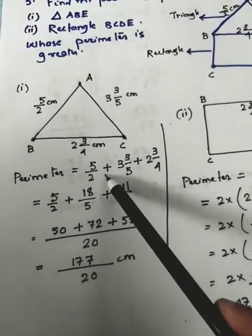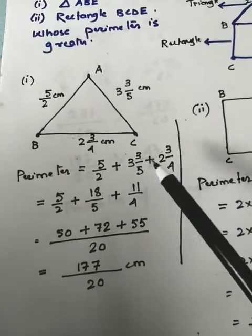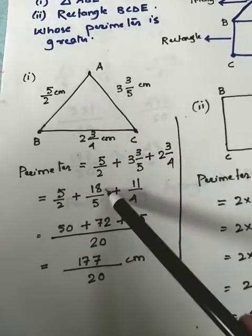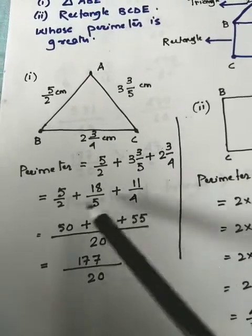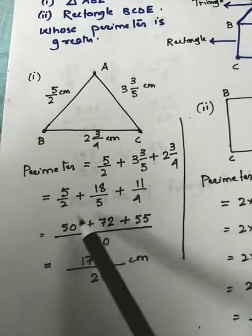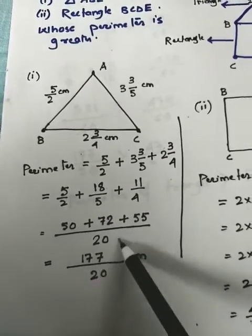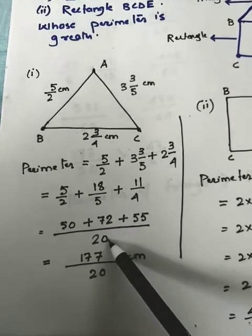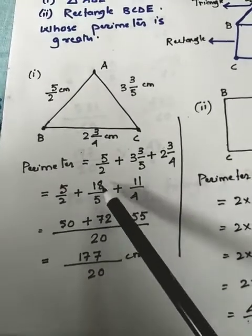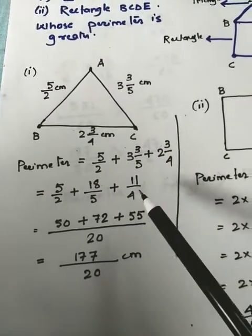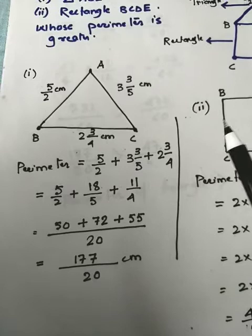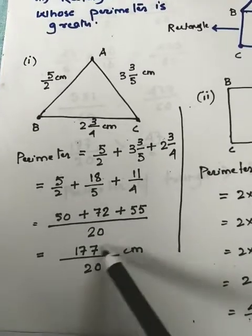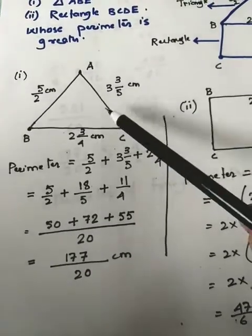So we add: 5/2 + 3 and 3/5 + 2 and 3/4. Converting to improper fractions: 11/2, 18/5, and 11/4. LCM of 2, 5, and 4 is 20. So: (10×11 + 4×18 + 5×11)/20 = (110 + 72 + 55) — wait, calculating: 10×11=110 is not matching; result is 177/20 centimeters. That is the perimeter of the triangle.